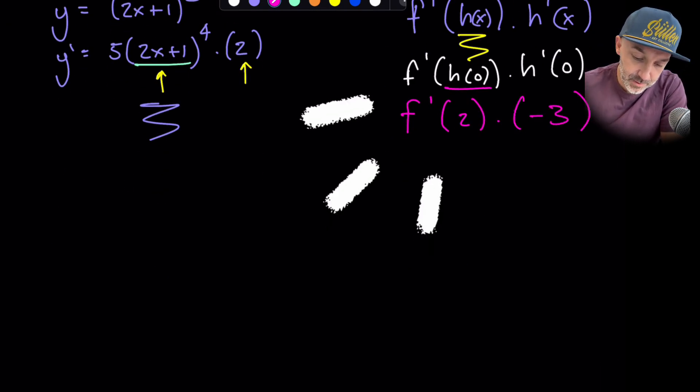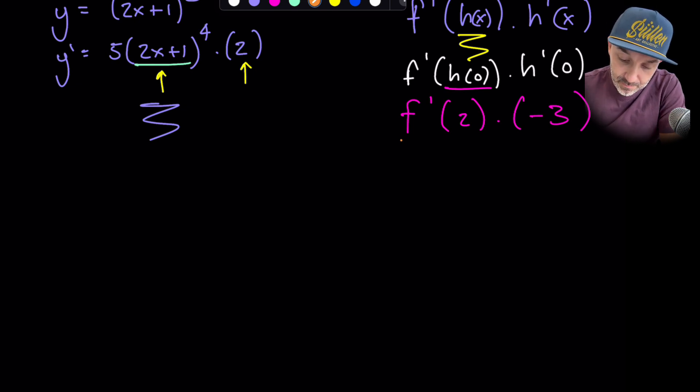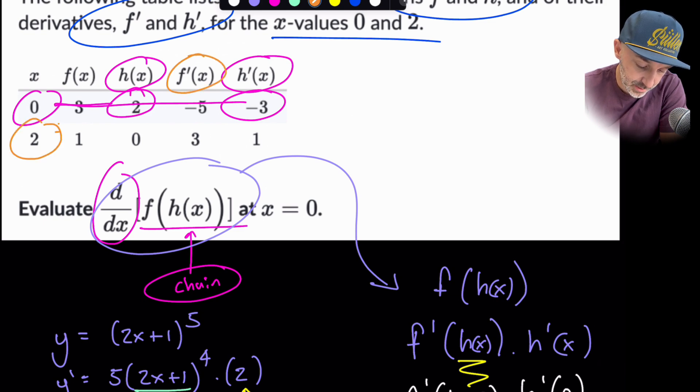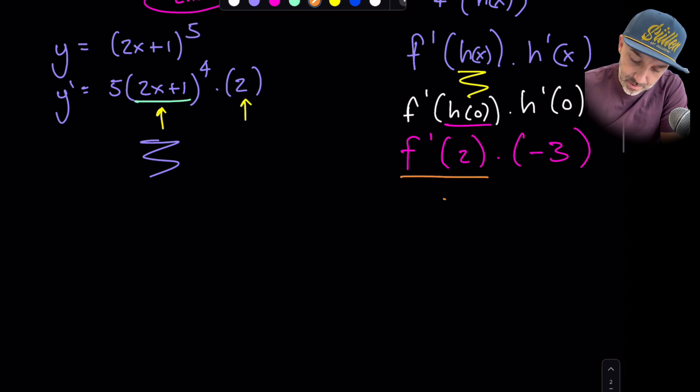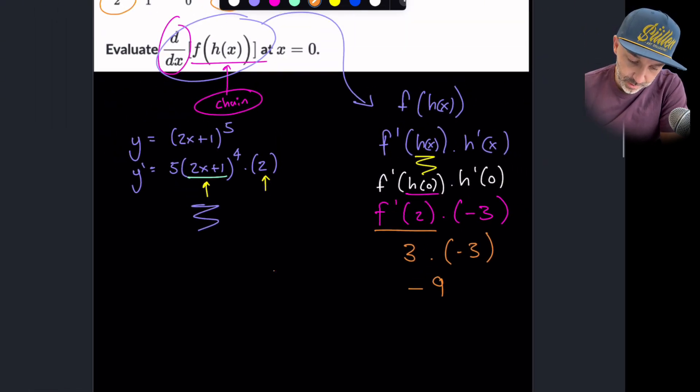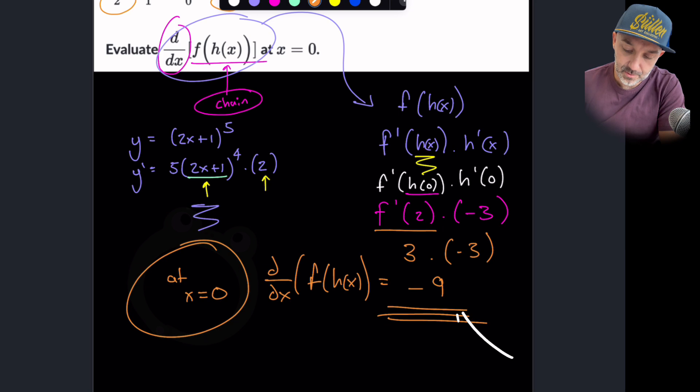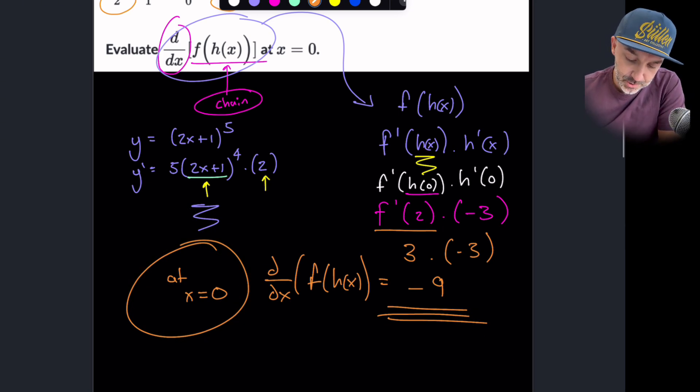Now we're almost there. Now we have to, it's like a little domino effect. We now need to go ahead and find what f prime of 2 is. So let's go back up to the table. f prime is here, 2 is here, cross-reference, that's 3. Okay, so that's 3. So 3 times negative 3 will equal minus 9. Okay, so the derivative, if we want to write out the full expression, d by dx of f of h of x at x equals 0 is minus 9. Okay, so that's the chain rule one.